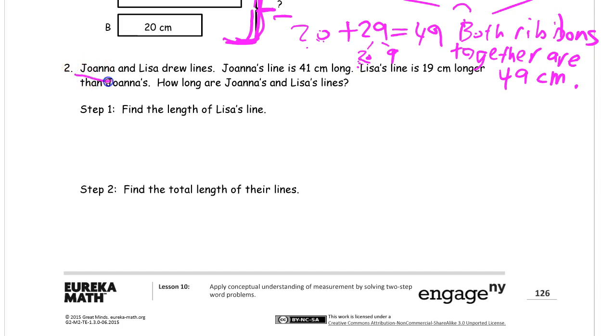Joanna and Lisa drew lines. Joanna's line is 41 centimeters long. Lisa's line is 19 longer than Joanna's—it's not 19, it's 19 longer. You got to read every single word or something like this will really change what you're doing with the numbers. How long are Joanna's and Lisa's lines? To find out how long they are together, we'd have to know what both of them are so we could add them together. But we don't know what one of them is; we only know Joanna's line. We have to find that out first before we can add them together. So there's a two-step problem.